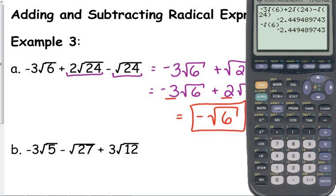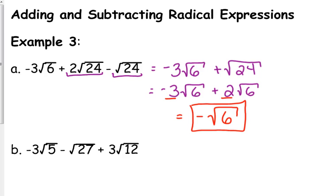Again, it won't tell you if you did it completely, because if I type in that intermediate step of negative 3 square root of 6 plus the square root of 24, it's going to give me the same answer. It's going to give me the same answer, but that first purple line is not the final answer that I'm looking for. It is equivalent, but it's not fully simplified.